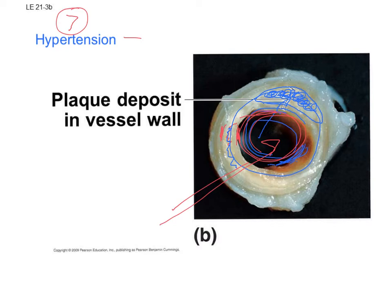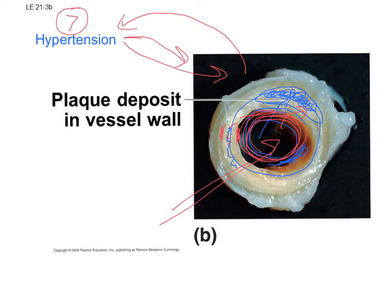When blood slows down, LDL flows by more slowly, meaning more fat gets deposited in the walls. So hypertension can cause atherosclerosis, and atherosclerosis causes further hypertension — more fat buildup means higher pressure, which means slower flow, which means more fat. It's a cycle that builds on itself. Once you have one condition, you very quickly develop the other.